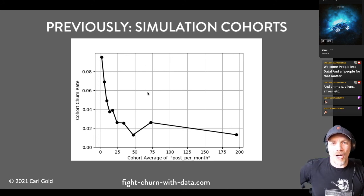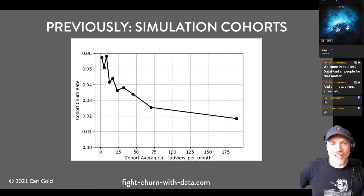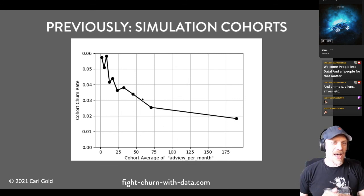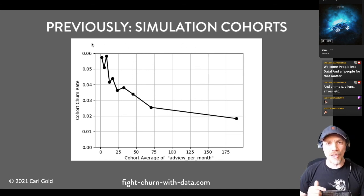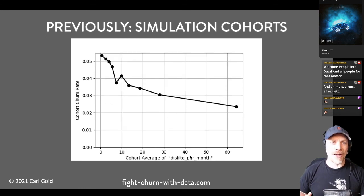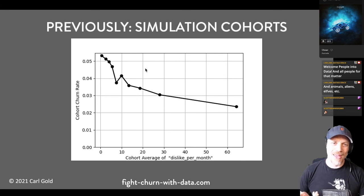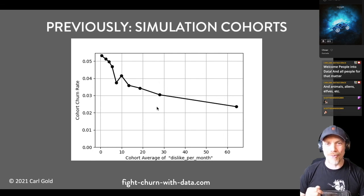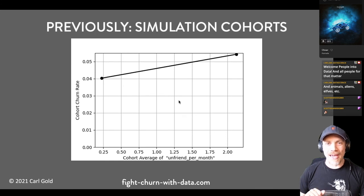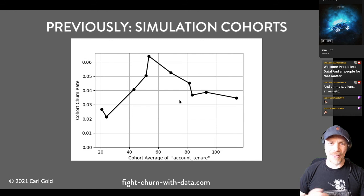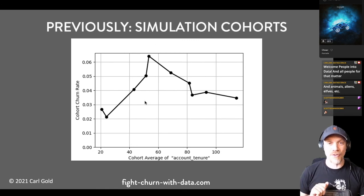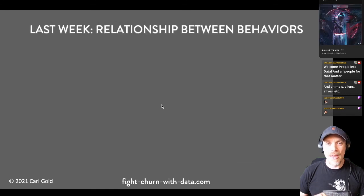Here are more cohorts from the simulation data. Here's an interesting one — ad views per month. You might think that viewing a lot of ads would cause people to churn, but this makes it look like the more ads they view, the less they churn. Same for dislikes per month — the more dislikes, the less churn. There's also unfriending per month, and another one is account tenure — how long customers have been a customer, which is another important kind of cohort analysis.